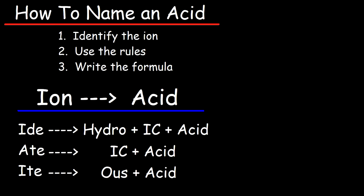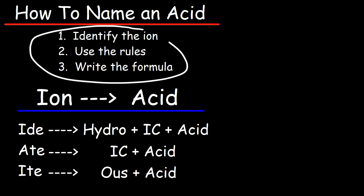In this video, we're going to talk about how to name acids. Here are some rules that you need to know. The first thing you want to do is identify the ion — it could be a polyatomic ion or a monoatomic ion.